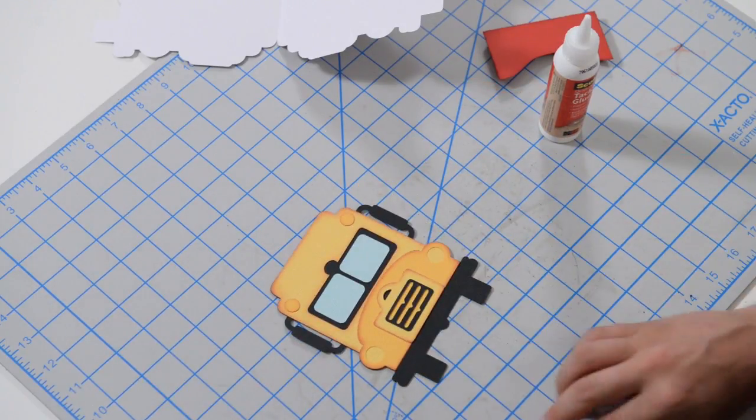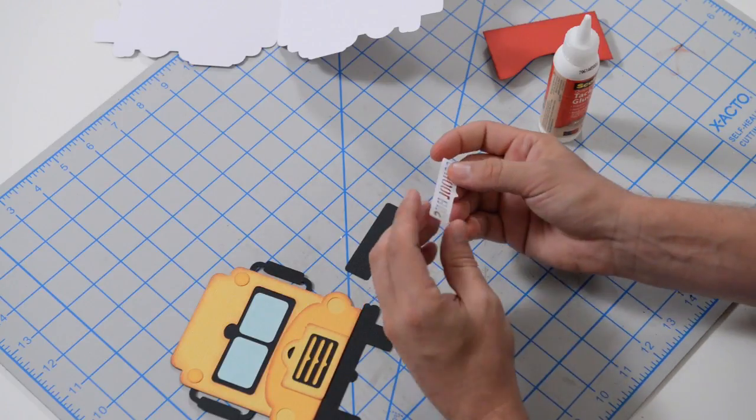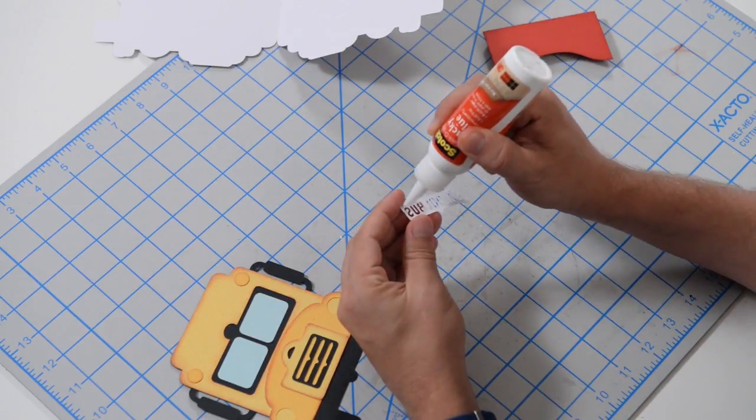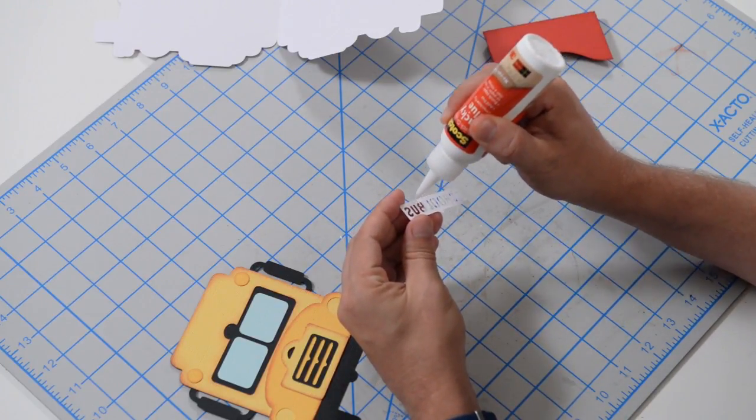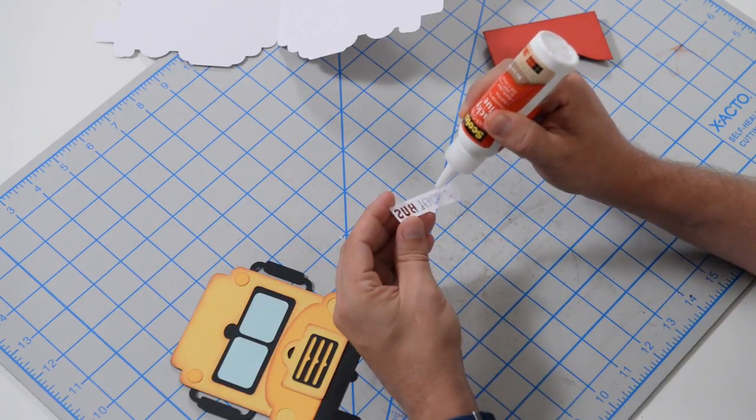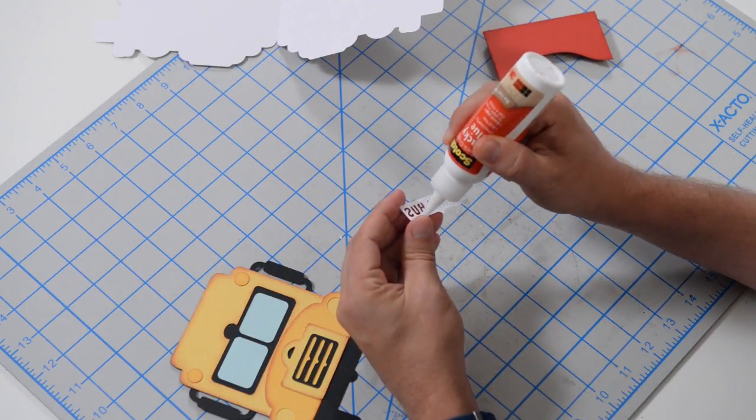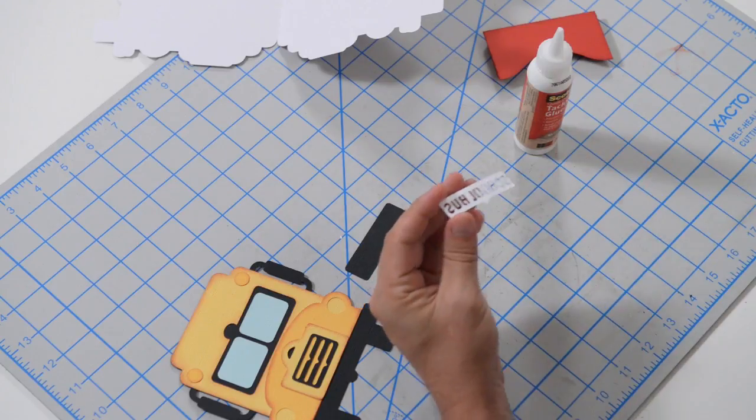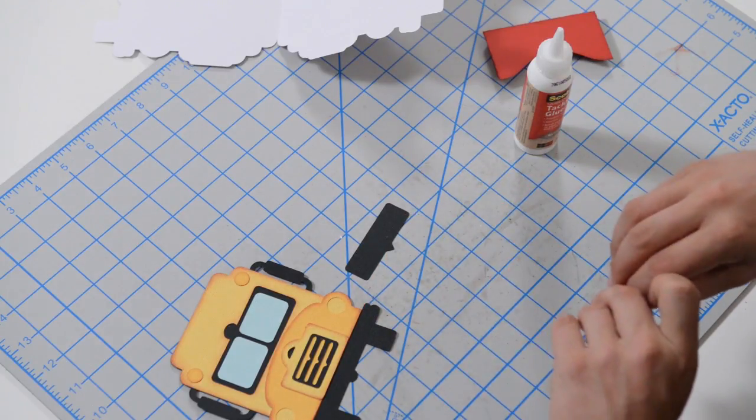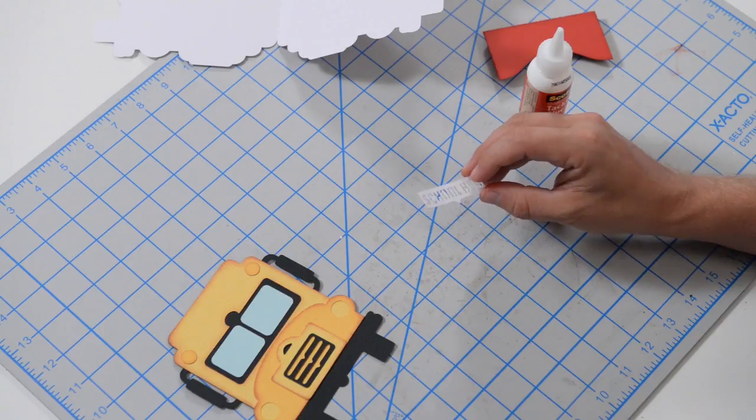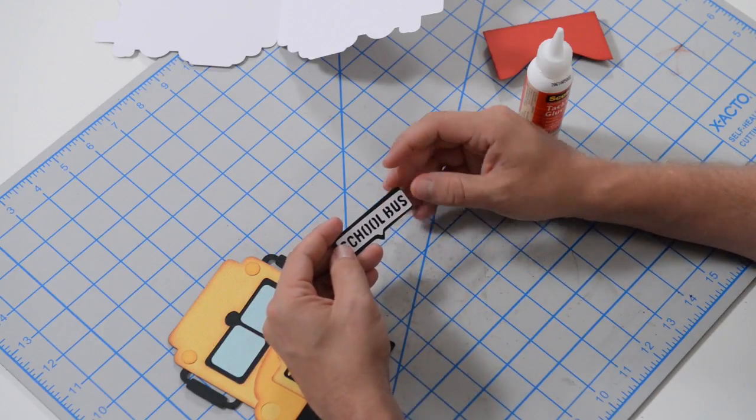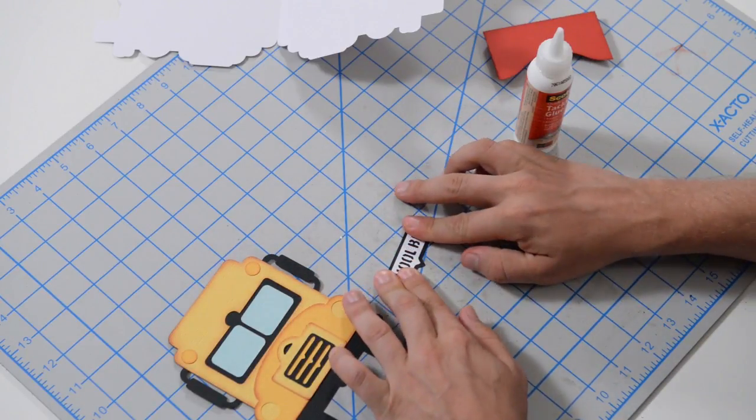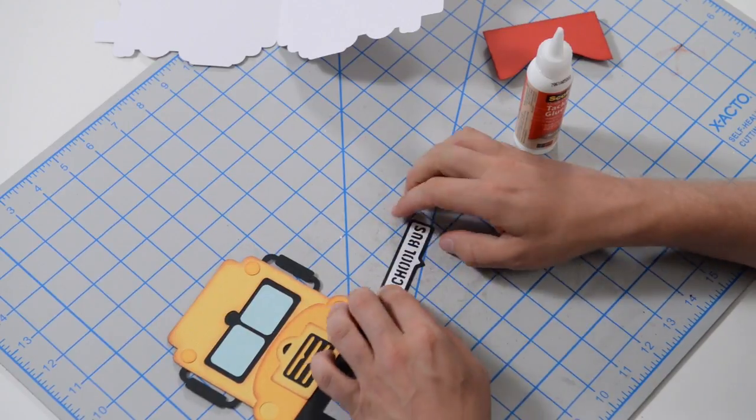And of course, what school bus would be complete without the little school bus sign. Let's take the white cutout here and we're going to glue it to the black portion. I'm just using a series of little dots here and there because this is a very delicate little piece. You don't want to take it with glue and I'm going to dab this a little bit so it doesn't smear. You want to get this nice and centered on the black piece. Use that little pointy arrow portion at the bottom to help guide you with the alignment.